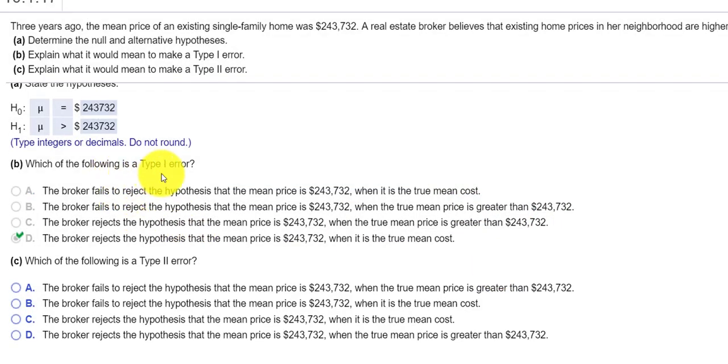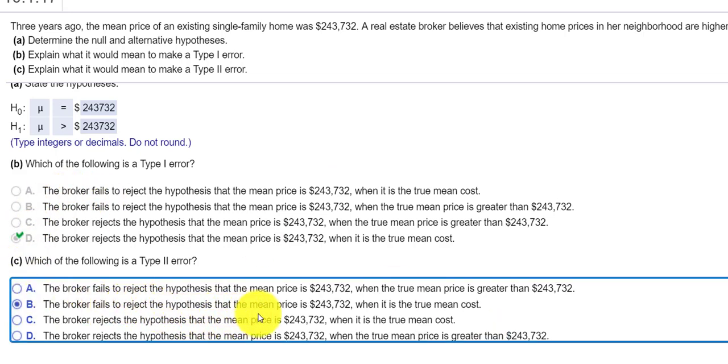And then a type two error, that would be where we fail to reject that the mean price is $243,732. All right, so we would fail to reject the hypothesis that the mean price is $243,732, when in fact the mean cost is greater. I clicked the wrong box again. So when the true price is actually greater than $243,732, yet we failed to reject the hypothesis that it is $243,732.